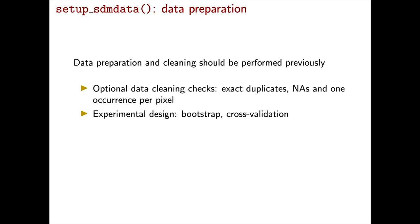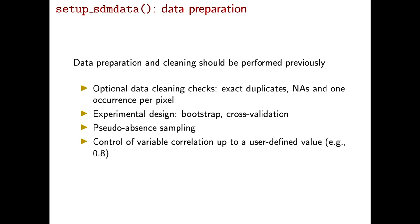This step is also where data partitioning happens, either bootstrap or cross-validation, including repeated cross-validation if the user wants. This creates test and training datasets for every partition. We also have a quick control of variable correlation up to a user-defined threshold. If environmental variables are highly correlated, the workflow selects which variables to remove so that the overall correlation structure of the dataset is reduced.